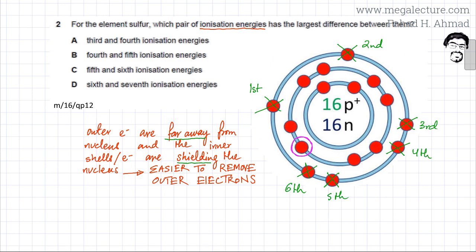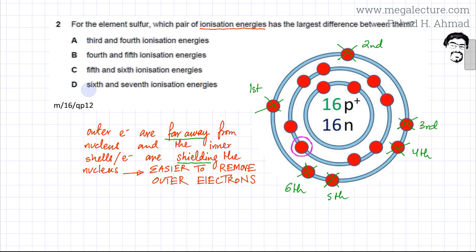As you move from the sixth ionization energy to the seventh ionization energy, removing the seventh electron would drastically become more difficult — the electron is closer to the nucleus and the shielding effect is lesser. So the answer to this question is option D: there is a large difference between the sixth and seventh ionization energy.